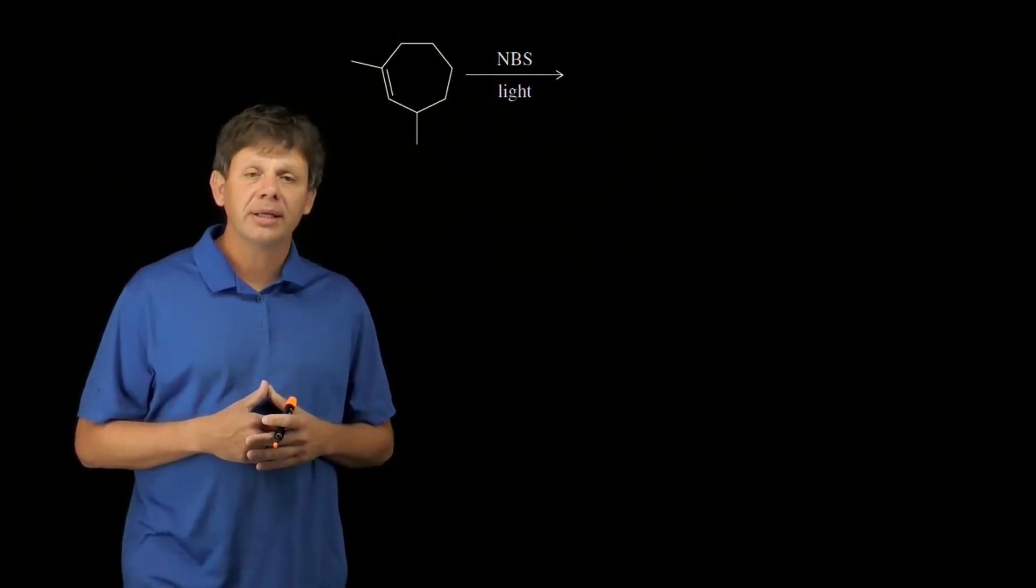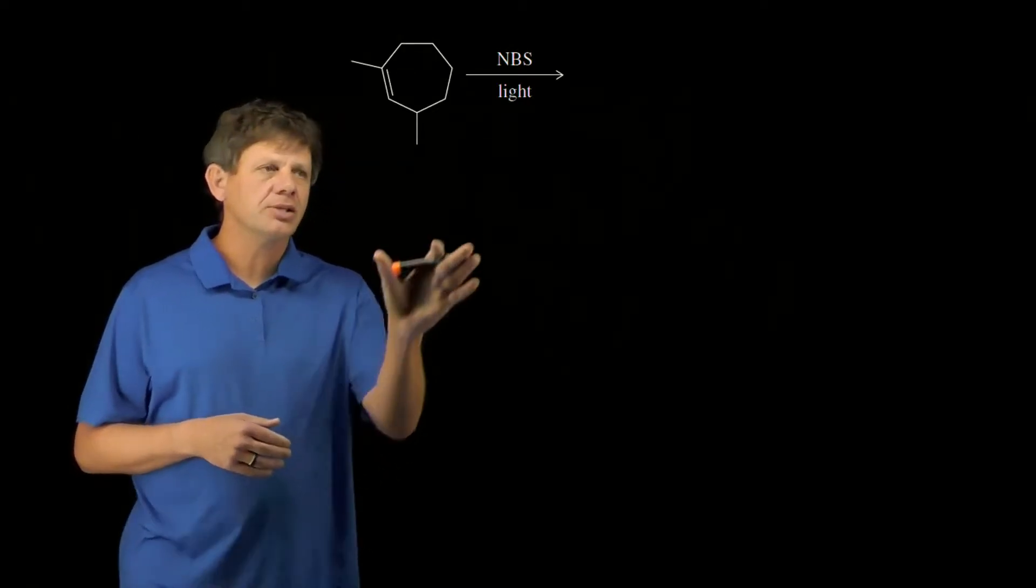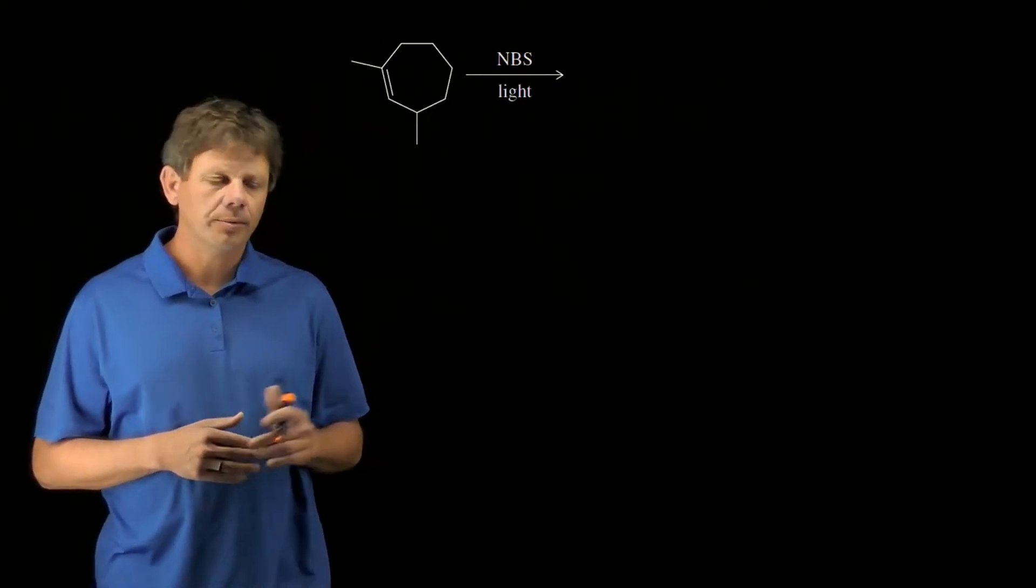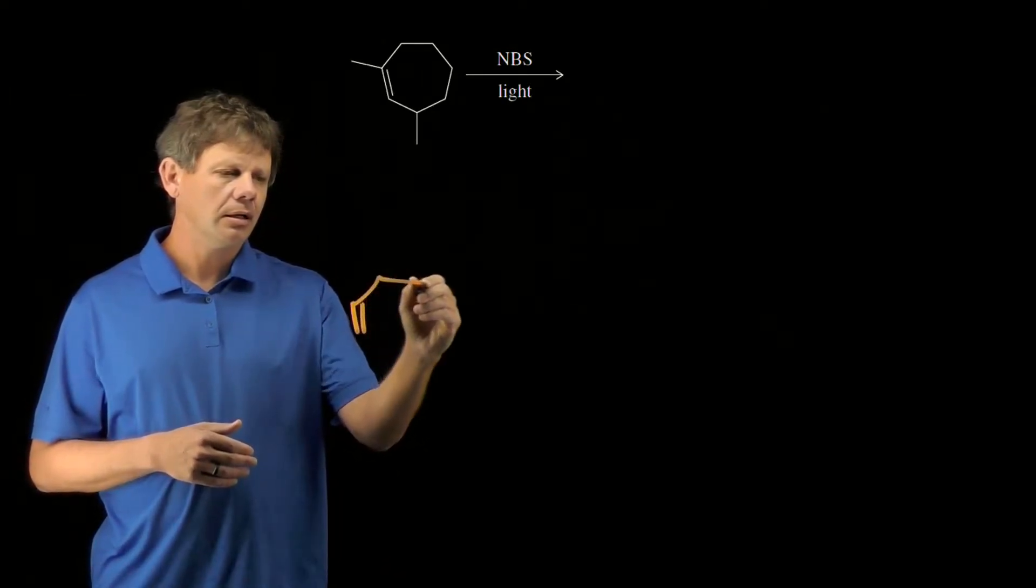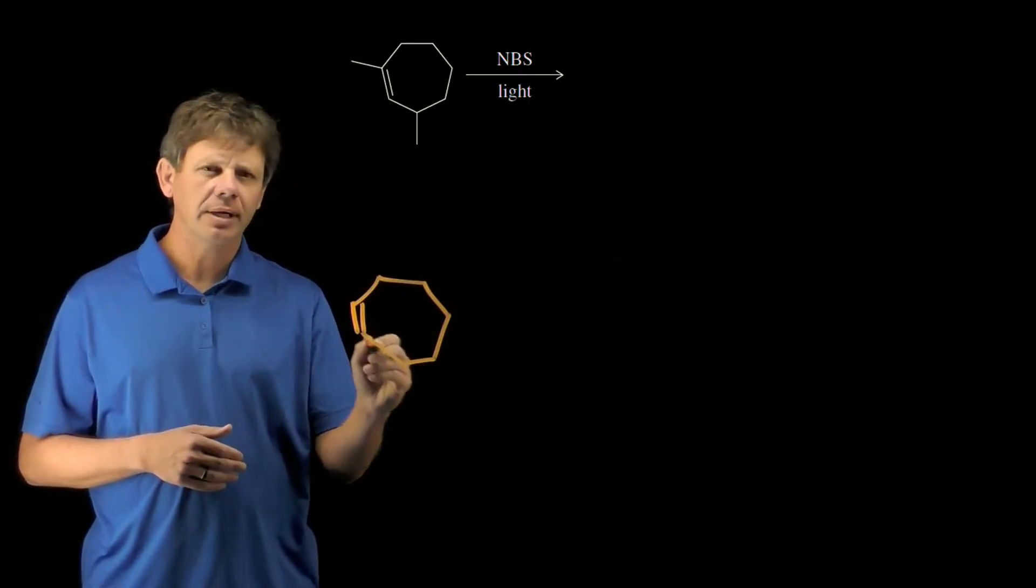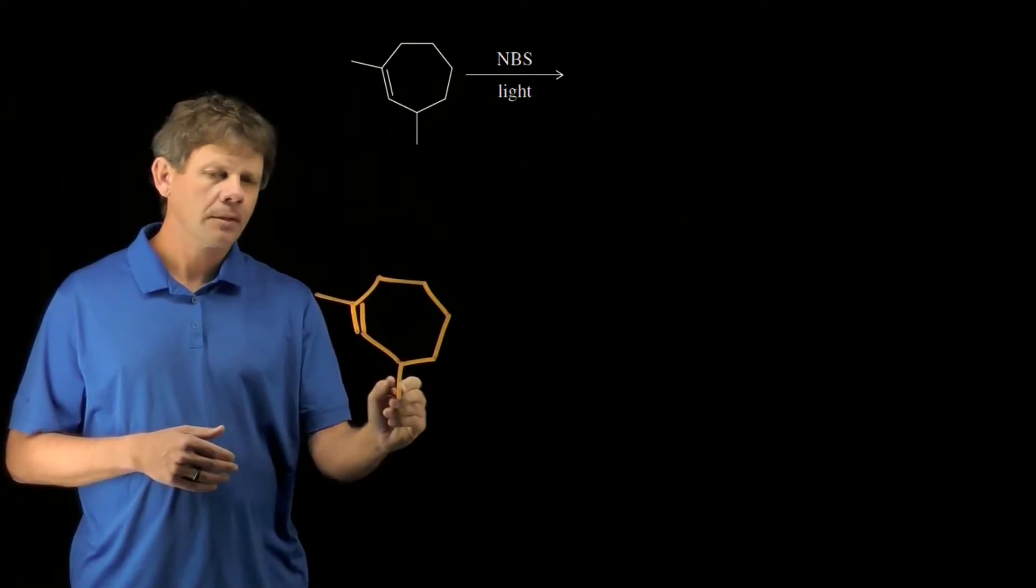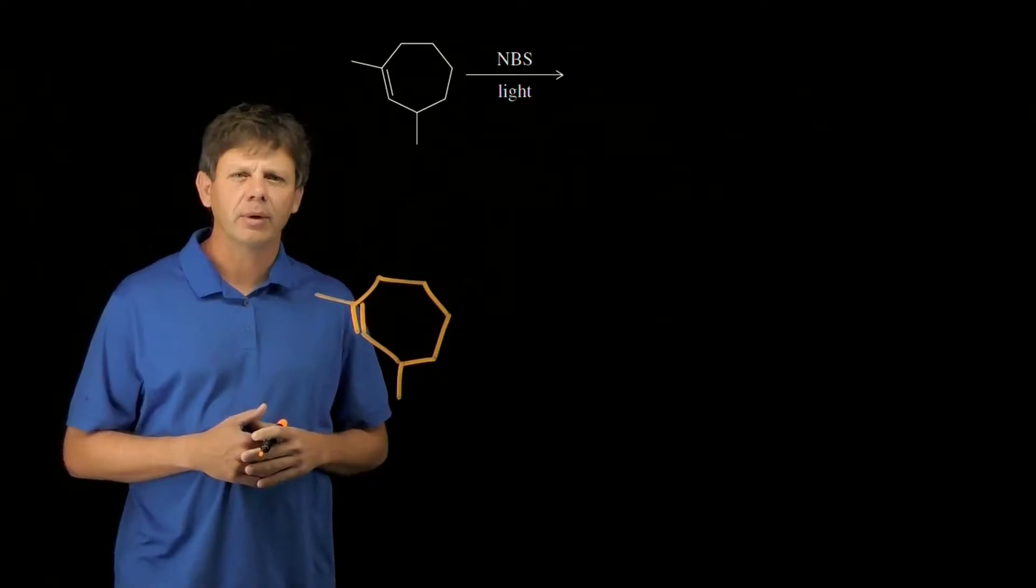This assessment asks us to predict the product of allylic halogenation of the alkene shown. I'm going to redraw the alkene, unfortunately a seven-membered ring, so that we don't have to deal with the weatherman effect.